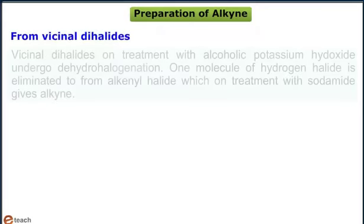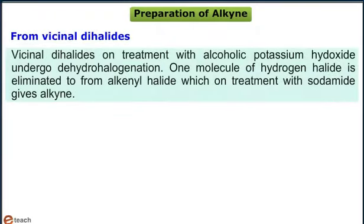From vicinal dihalides: Vicinal dihalides on treatment with alcoholic potassium hydroxide undergo dehydrohalogenation. One molecule of hydrogen halide is eliminated to form alkenyl halide, which on treatment with sodamide gives alkyne.